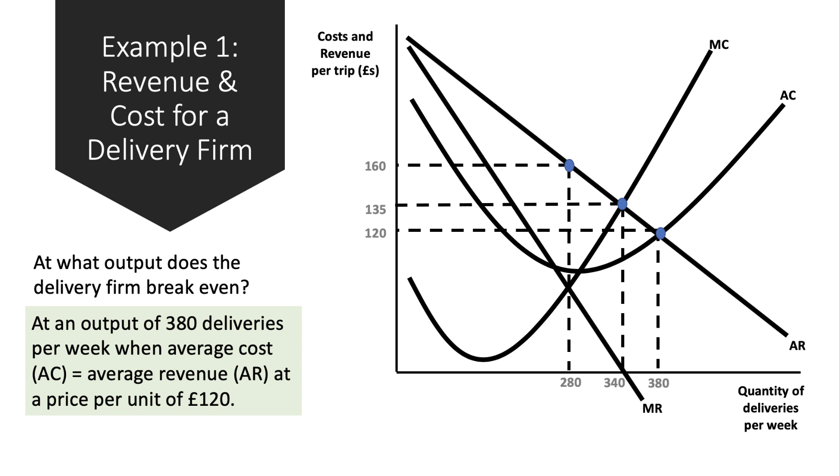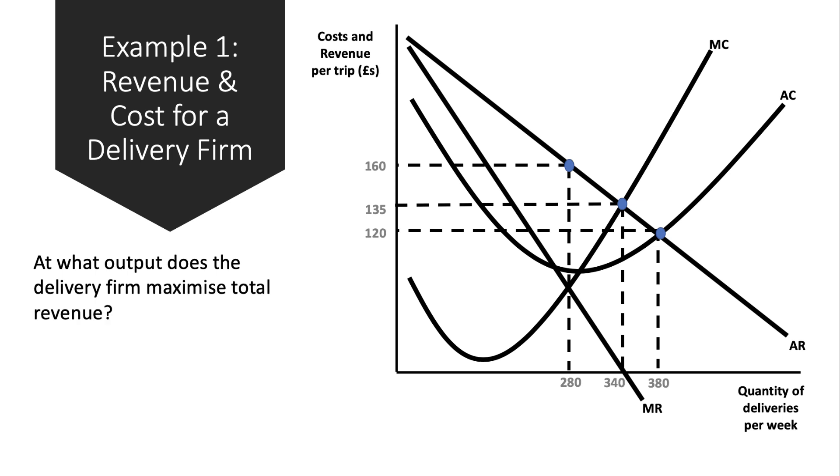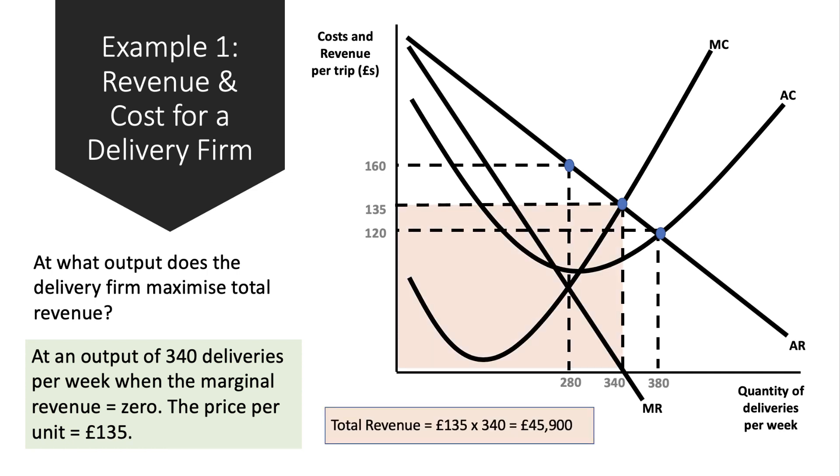Second question: at what output does the delivery firm maximize total revenue? You maximize revenue where the marginal revenue is zero, where the MR curve cuts the x-axis, halfway down the average revenue curve. That's 340 deliveries per week and the price per unit is £135. Price per unit multiplied by output gives total revenue, which I've calculated to be £45,900.